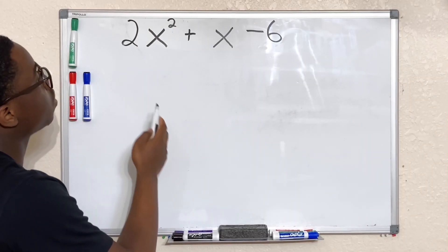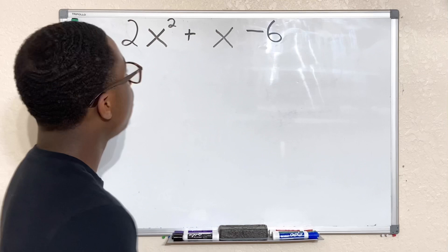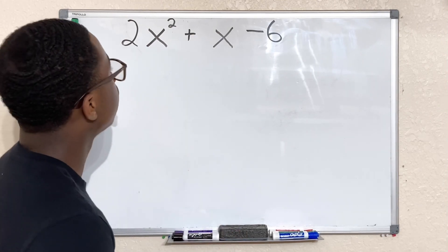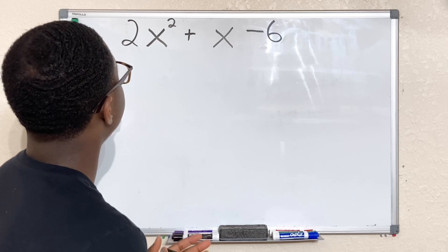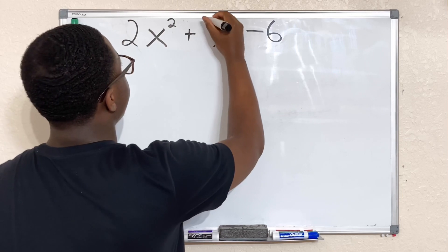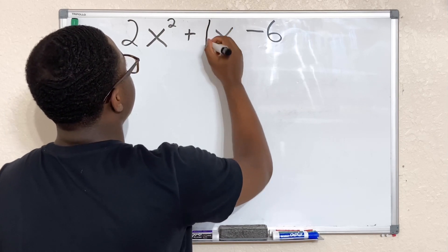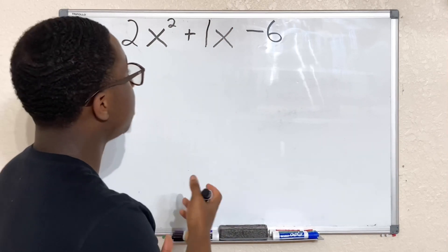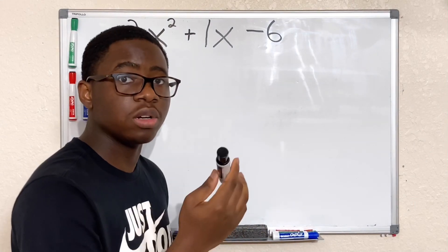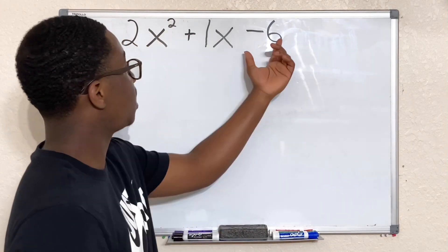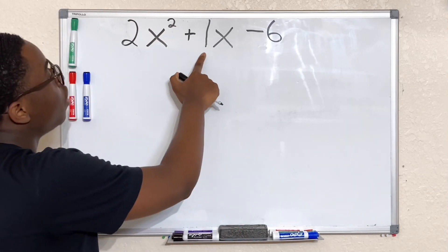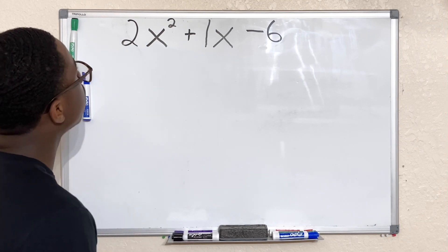So now we have 2x squared plus x minus 6. We have ourselves our leading coefficient. So let's walk through on how to factor this trinomial. The first thing I would do is put in a placeholder for this x. I'm gonna go ahead and put 1 as its coefficient. 1 times anything is that thing—1 times x is x. So that's why I go ahead and put one there.